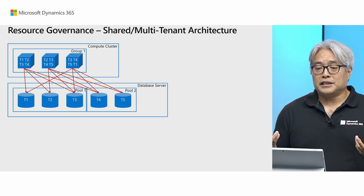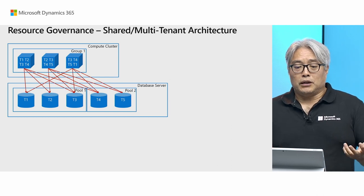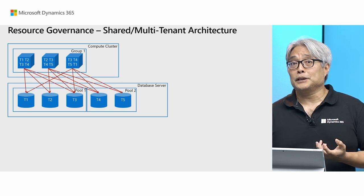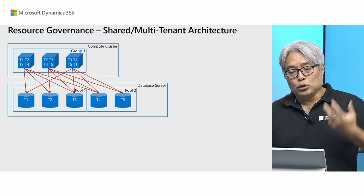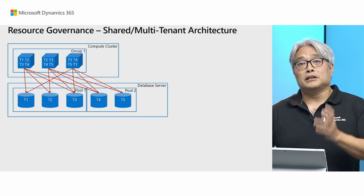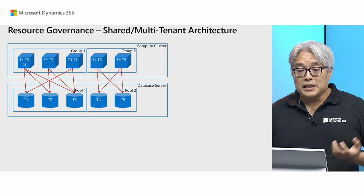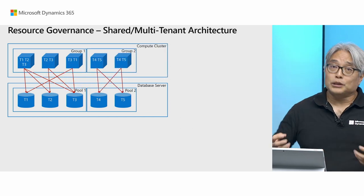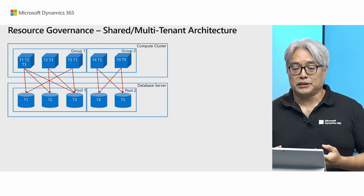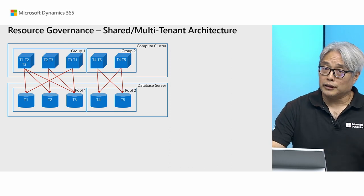If tenants 4 and 5 need more compute resources and we only have three hosts in the compute cluster, we can scale out and add more hosts — like two more hosts — and then mount T4 and T5 and group them in this new group of hosts. In that case, T4 and T5 will have more compute resources to run parallel tasks, parallel web service requests, etc. That's a quick introduction of a shared multi-tenant architecture.